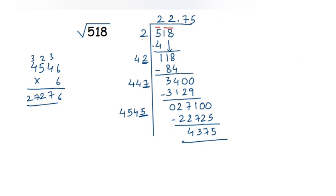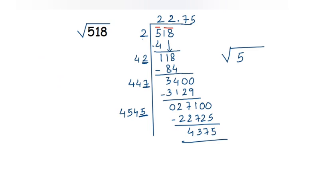So the square root of 518 is approximately 22.75. After 22.75 there are more digits, but we are approximating to two decimal places only. This is how you do it — it works just like normal division. Now I'll show one more problem, this time a four-digit number: the square root of 2316.